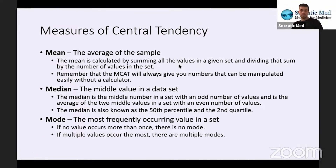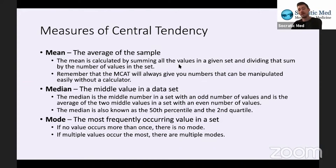The mode is the most frequently occurring value in a set — whichever value occurs most often. A helpful memory trick: MO stands for 'most often.' If no value occurs more than once, there's no mode. And if multiple values occur at the same highest frequency, there are multiple modes. For example, if two values each appear three times and no other value appears more, there would be two modes. If there are no duplicates throughout the set, there would be no mode.